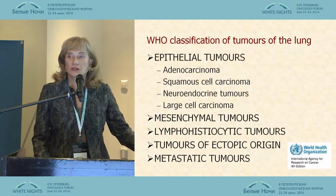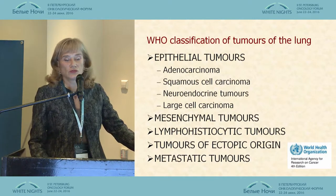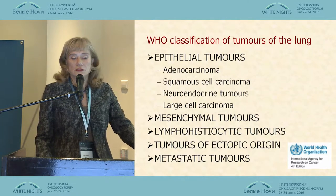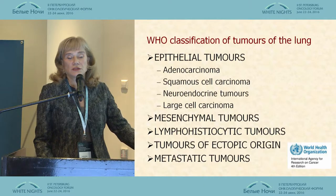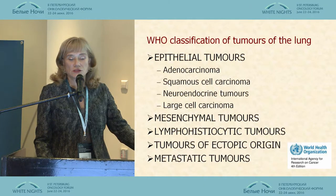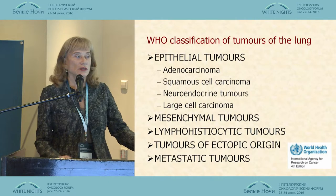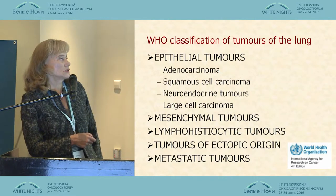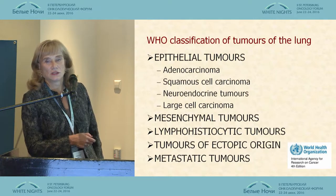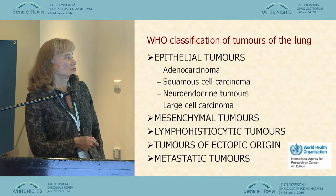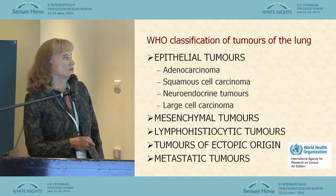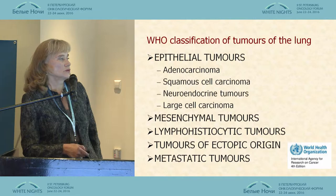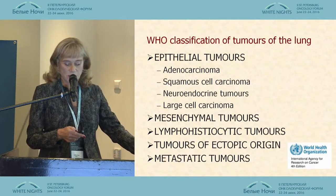In the morphological last double WHO classification of tumors of the lung, it is represented as epithelial tumors, including adenocarcinoma, squamous cell carcinoma, neuroendocrine tumors of the lung, and large cell carcinoma as a separate tumor. And also some different mesenchymal, lymphohistiocytic, and tumors of ectopic origin, and metastatic tumors.